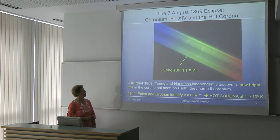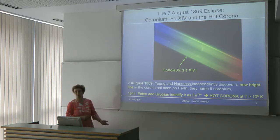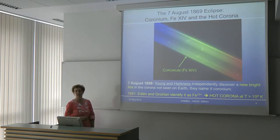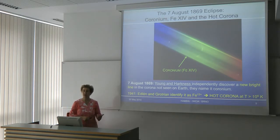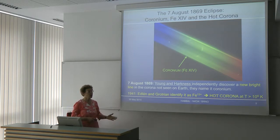A year later, two people independently observed the corona and found a very bright green line. At the time they had no lab comparison, so they called it coronium — from corona. Looking at the date, this was 1869, and it wasn't until 1941 that this spectral line was identified as iron stripped of 13 of its electrons. For this to happen, you need a medium at over a million degrees in temperature. That was the beginning of exponential growth in solar corona research.